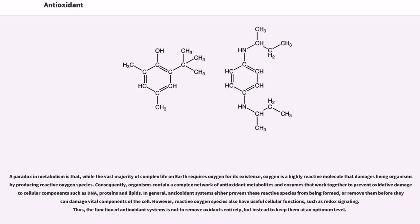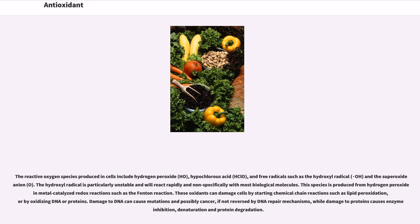The reactive oxygen species produced in cells include hydrogen peroxide, H2O2, hypochlorous acid, HOCl, and free radicals such as the hydroxyl radical, •OH, and the superoxide anion, O2•−. The hydroxyl radical is particularly unstable and will react rapidly and nonspecifically with most biological molecules.